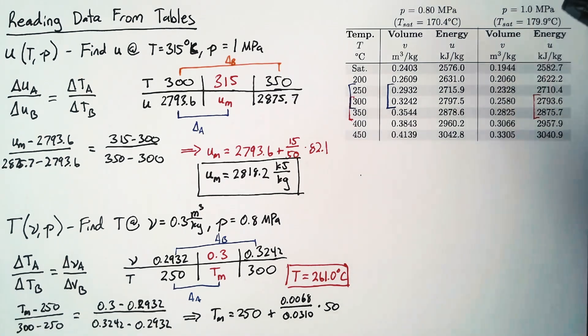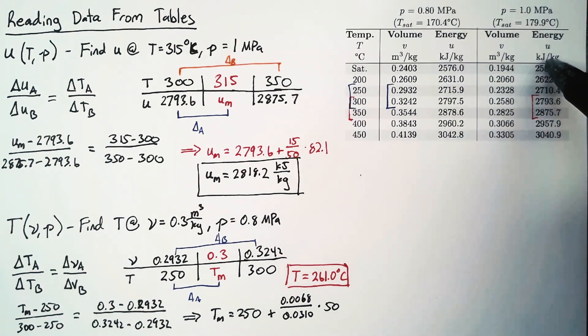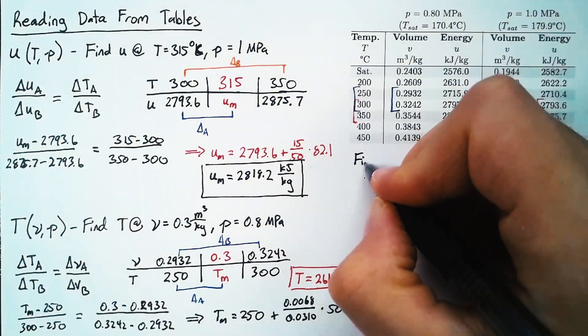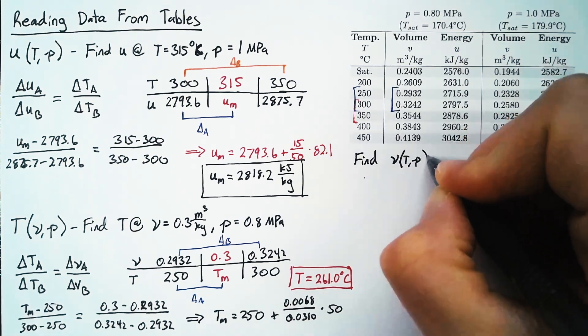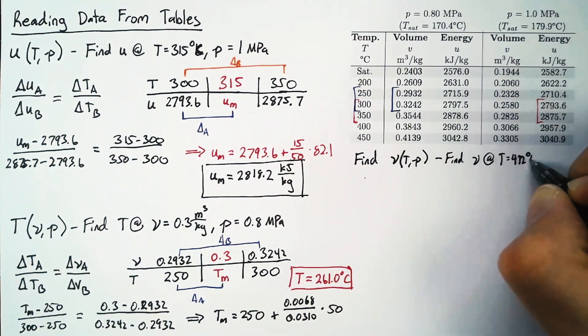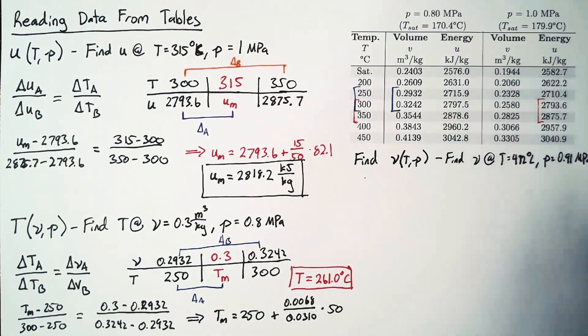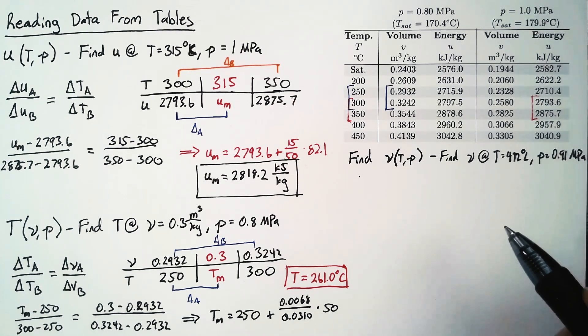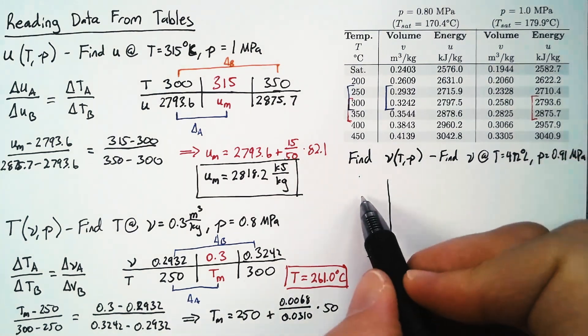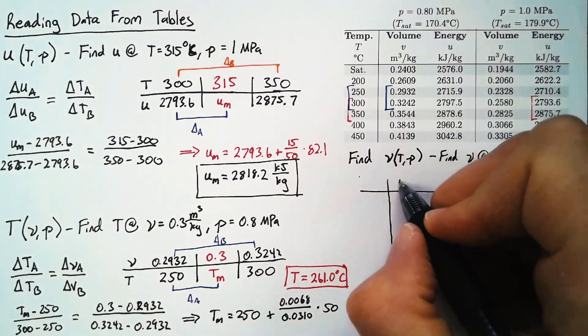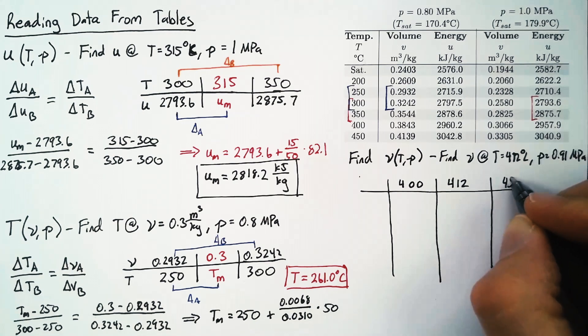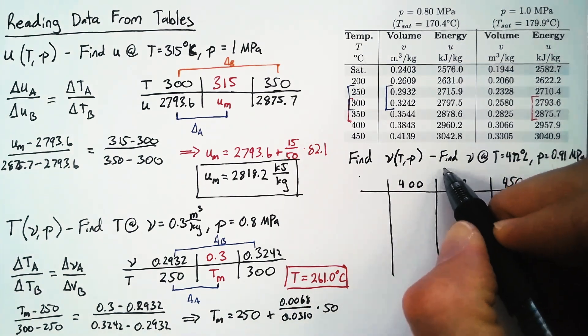So far we've stayed on one table. But what happens if our pressure is not in one of those tables? Let's find the specific volume at T=412 degrees Celsius and P=0.91 megapascals. This is more complicated because we have variation in both temperature and pressure. We'll draw this table differently. Our temperatures are 400, 412 as the midpoint, and 450.